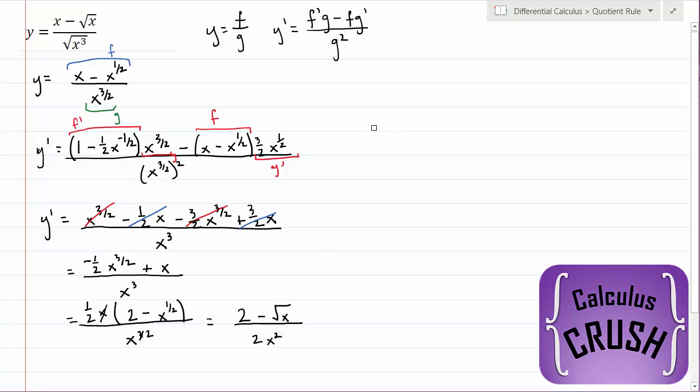So let's write this, our final answer, y prime equals 2 minus the square root of x, divided by x squared, times 2. And there you go. That is the final answer.